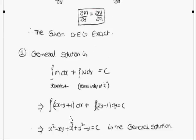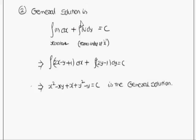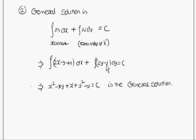The general solution is the integral of Mdx treating y as constant, plus the integral of terms independent of x in N, equals c. Here M = 2x − y + 1, and the terms independent of x in N are 2y − 1 (the x term is eliminated). Carrying out the integration gives x² − xy + x + y² − y = c, which is the general solution.